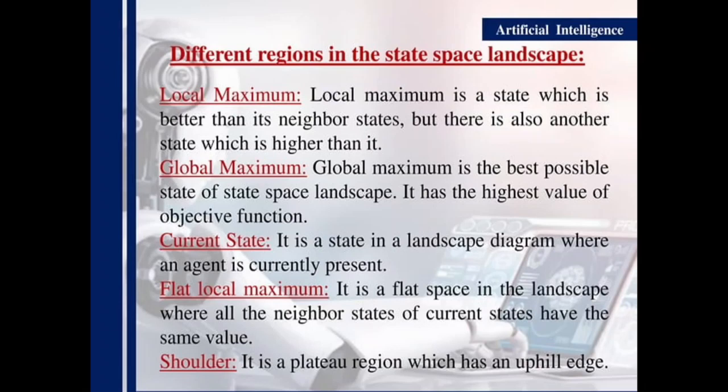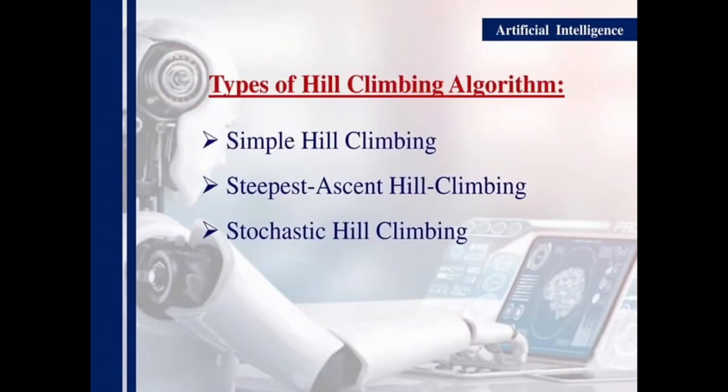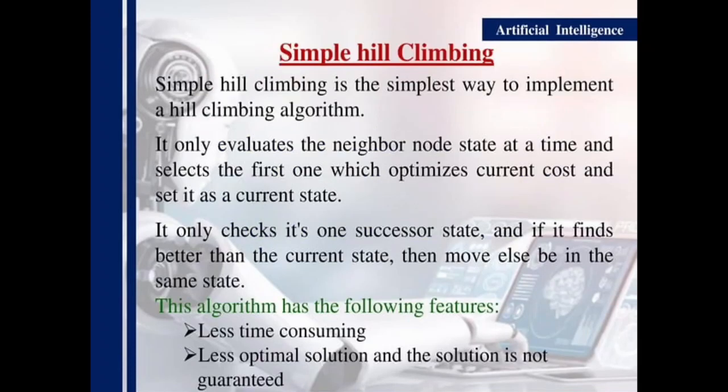Shoulder: it is a plateau region which has an uphill edge. Now we are going to talk about the types of hill climbing algorithm: simple hill climbing, steepest ascent hill climbing, and stochastic hill climbing.